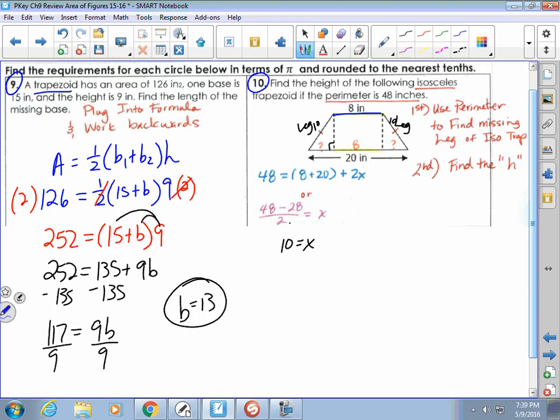Since this is 8, 8 opposite sides are congruent. 8 and 8, and the whole thing is 20. So I do 20 minus 8. That would give me my 12. And then these two pieces are going to be the same, so divide by 2. So now I know this is 6.